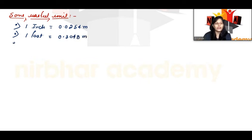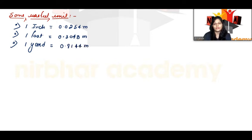Third unit: 1 yard is equal to 0.9144 meters.